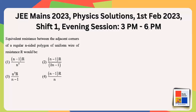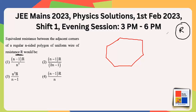The question asks for the equivalent resistance between adjacent corners of a regular n-sided polygon made of uniform wire of total resistance R. Since it is a regular polygon, each side has the same resistance, so the resistance of one side is R/n.